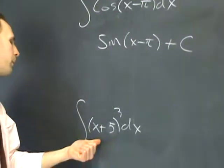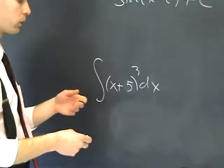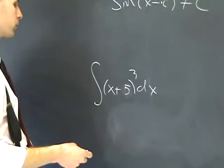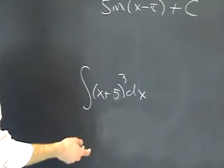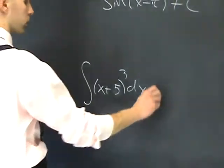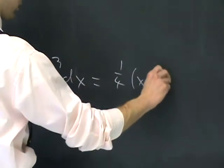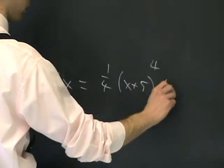For example, this thing here, x plus 5 cubed. If you were integrating x cubed, you would have no trouble saying that's 1 fourth x to the fourth. Well, the same thing applies here. This is not a whole lot different. It's just x plus 5. So the answer to this would just be 1 fourth x plus 5 to the fourth plus c.